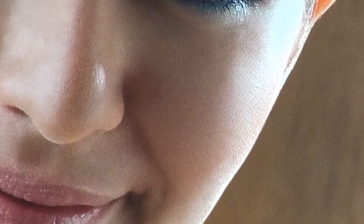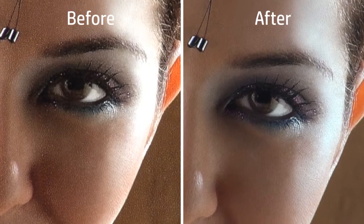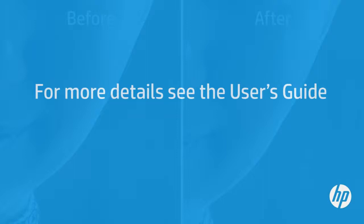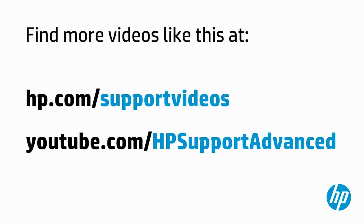Adjusting the media profile settings can make a noticeable improvement in print quality. See in this side-by-side comparison what a marked difference the adjustments have made to the print. For more details about troubleshooting graininess on your prints, see the user's guide for your HP Latex printer. You can find additional helpful videos at hp.com/supportvideos, and on our YouTube channel, youtube.com/hpsupportadvanced.